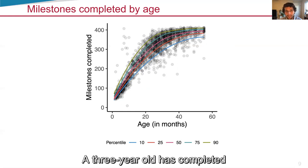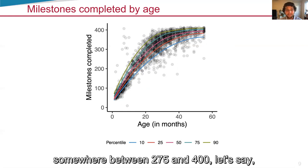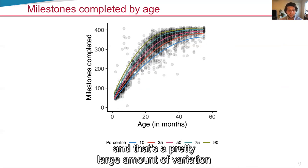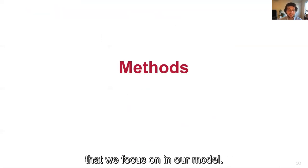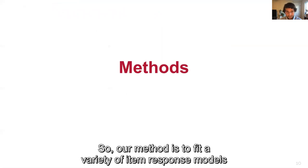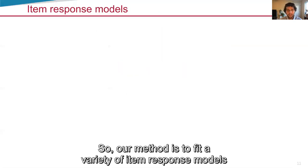A three-year-old has completed somewhere between 275 and 400, let's say. That's a pretty large amount of variation for children of the same age. And it's going to be one of the things that we focus on in our model.